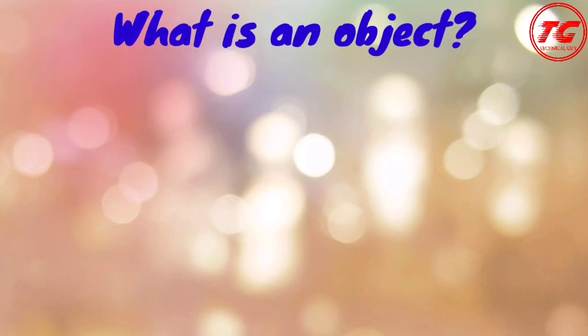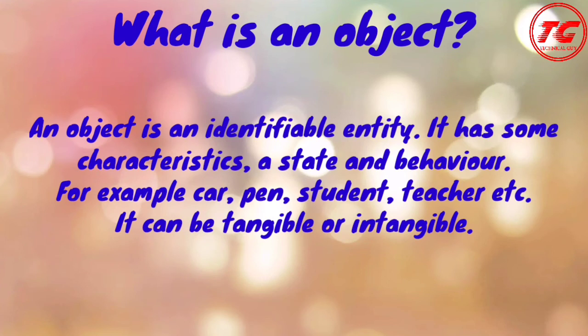Once the house is ready, that house is an object, and the object is created using a template or blueprint — that blueprint is called a class. In software terms, an object is an identifiable entity that has some characteristics, a state, and behavior. For example, car, pen, student, teacher — all are objects. These objects can be tangible or intangible. Tangible objects are those you can see or touch; intangible things like air cannot be seen or touched but can be realized.